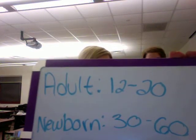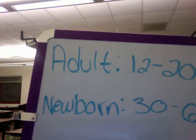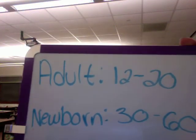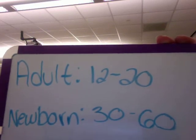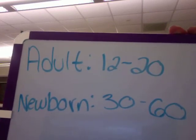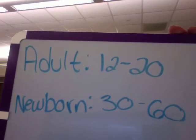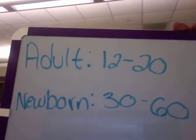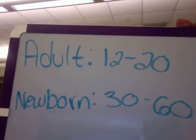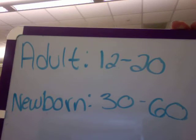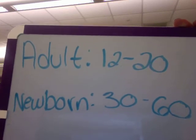Keep in mind that normal respirations for the average adult are 12 to 20 breaths per minute. Normal respirations for a newborn is 30 to 60 breaths per minute. You now know how to count respirations.